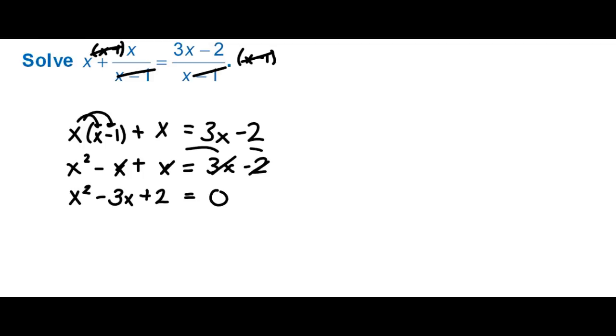Now when I go ahead and factor that it looks like I might be able to use x minus 2 and x minus 1 because negative 2 and negative 1 multiply to give me 2 and negative 2 and negative 1 add to give me negative 3. So when those factors are set equal to 0 we can see that x equals 2 or x equals negative 1.